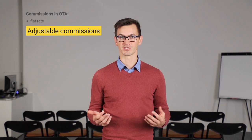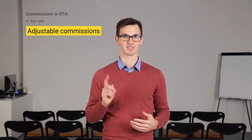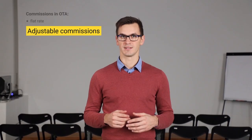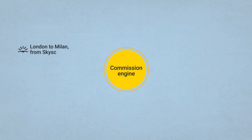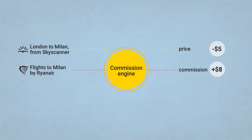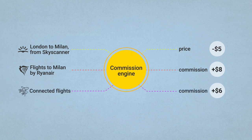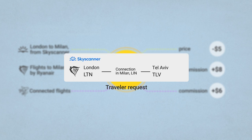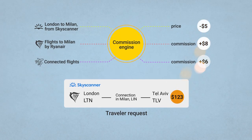Revenue managers consider multiple factors and add rules using a commission engine. But here's a problem: what if you have hundreds of rules and they start conflicting with each other? Imagine one rule says that flights from London to Milan must go with a $5 discount on Skyscanner. Another rule says that flights to Milan by Ryanair must go with an $8 commission. And to make matters worse, you sell connected flights with a $6 commission. Now imagine a traveler wants to fly from London to Tel Aviv by Ryanair with a connection in Milan, and they find your deal on Skyscanner.